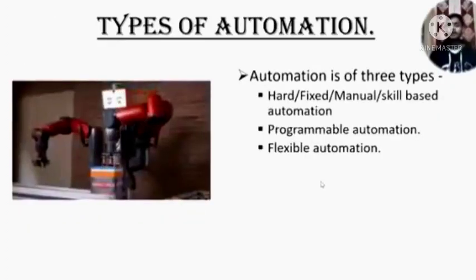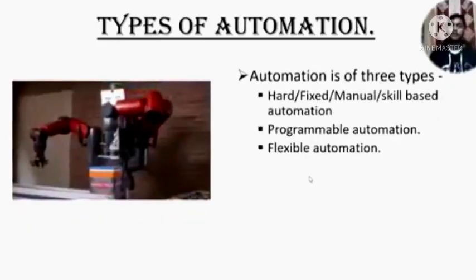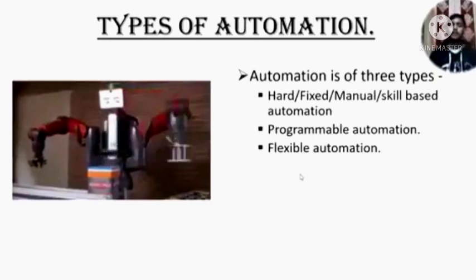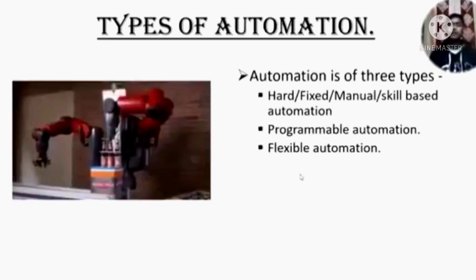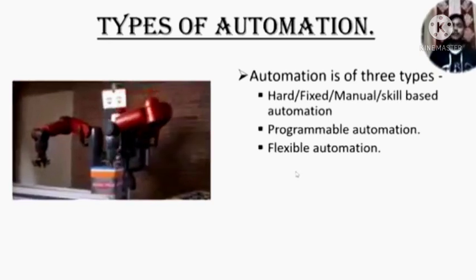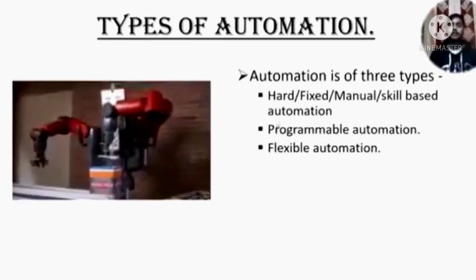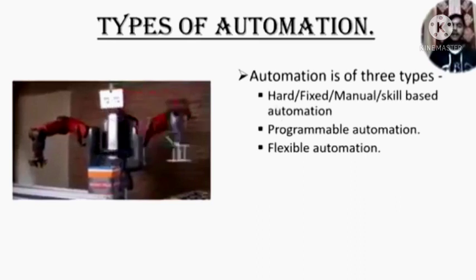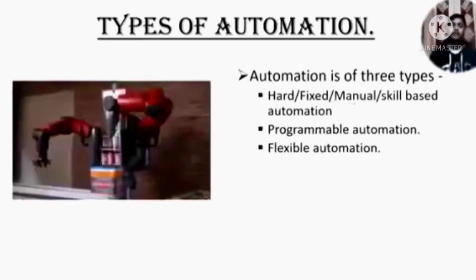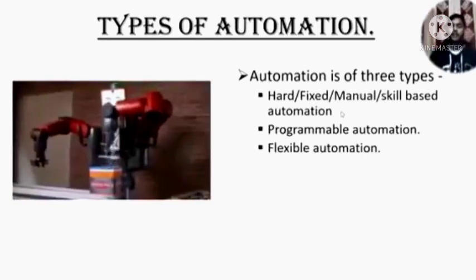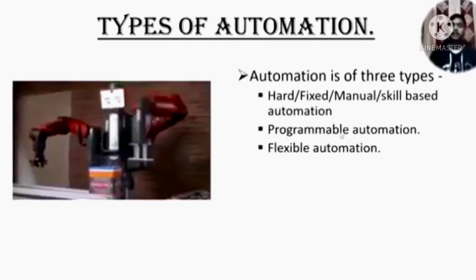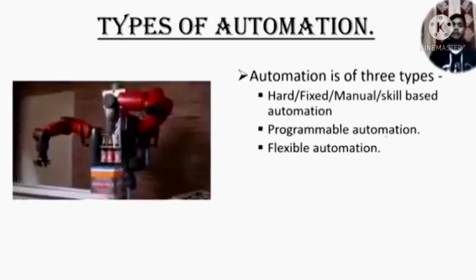Now we will see types of automation. Automation is broadly divided into three types. The first one is hard, fixed, manual or skill-based automation. The next one is programmable automation. And the third is flexible automation.